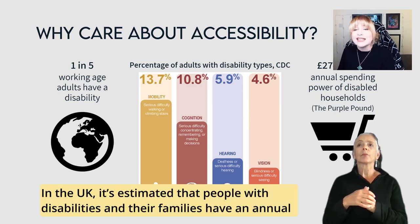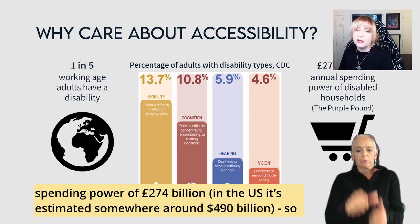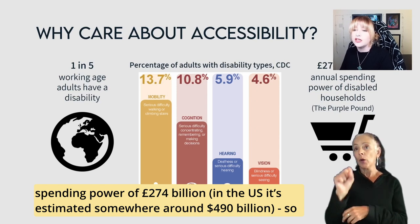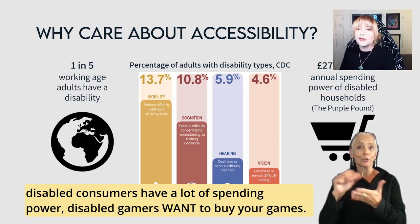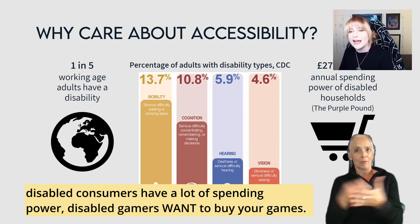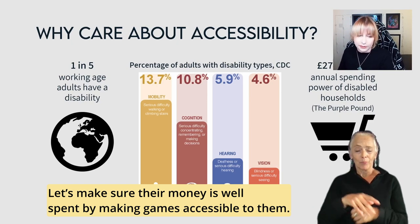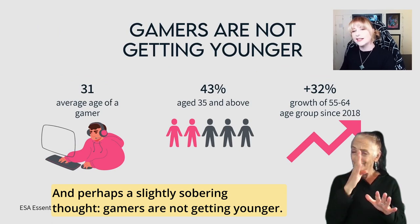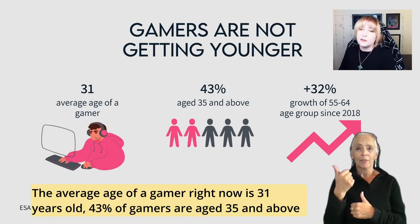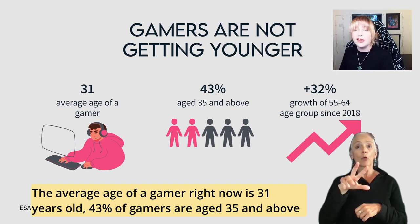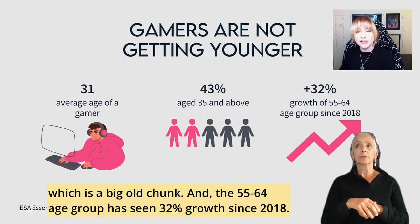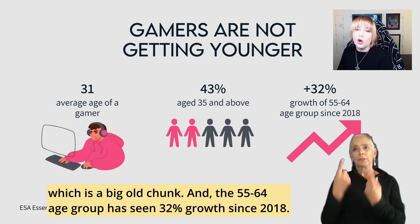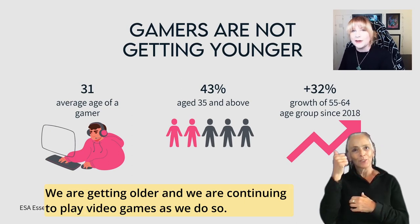In the UK, people with disabilities and their families have an annual spending power of £274 billion; in the US it's estimated around $490 billion. So disabled consumers have a lot of spending power — disabled gamers want to buy your games, let's make sure their money is well spent by making games accessible to them. And perhaps a slightly sobering thought: gamers are not getting younger. The average age of a gamer right now is 31, 43% are age 35 and above, and the 55–64 age group has seen 32% growth since 2018.